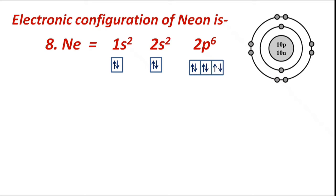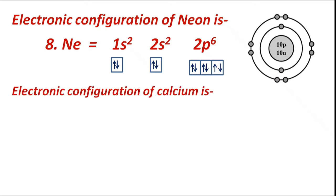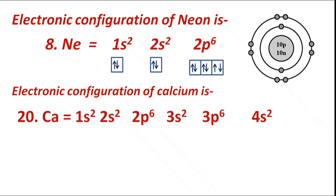In this way, the electronic configuration of neon is 1s2 2s2 2p6. By the same way, the electronic configuration of calcium is 1s2 2s2 2p6 3s2 3p6 4s2. At first, filling of electrons takes place in 1s singly, and then pairing occurs with electrons of opposite spin.